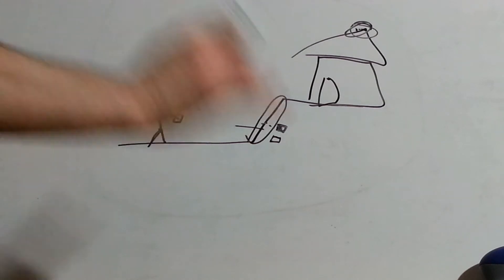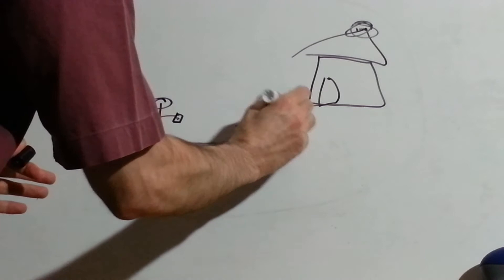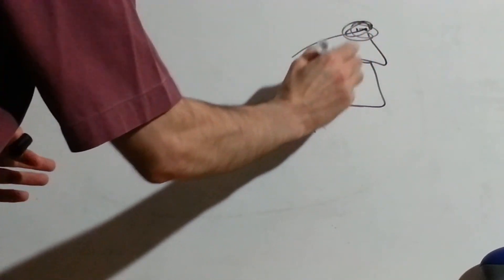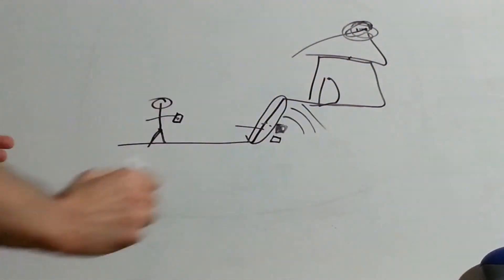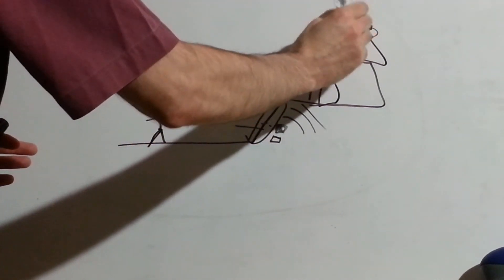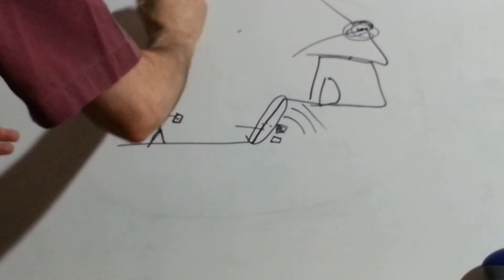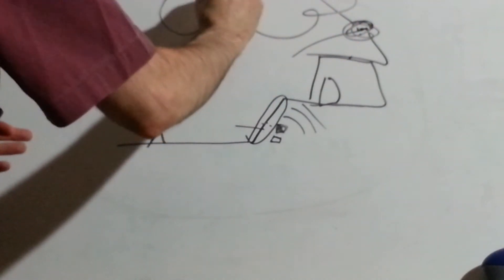What Internet of Things does is this Wi-Fi chip will connect through Wi-Fi to the homeowner's Wi-Fi, and then through the internet, through the Wi-Fi internet connection, it will connect out to a cloud-based service.